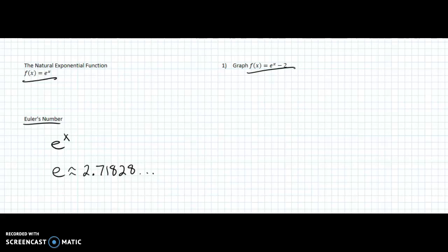So if you want to graph f of x is equal to e to the x minus 2, the good news for this is it's just an exponential function. So it's going to be a lot like what we did in 4.1, except here the base is e. But the shift is the same. So this will go down 2.